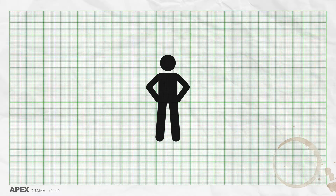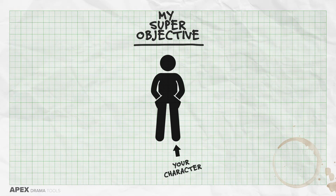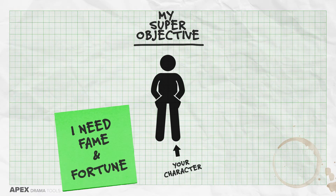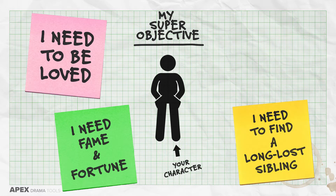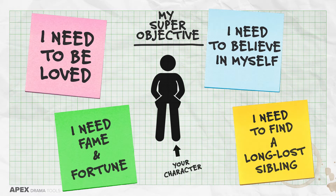What are they? A super objective is something that your character needs in their life — a life goal, an overarching aim or goal for the whole play or their whole life. Some examples of super objectives might be: I need fame and fortune, I need to be loved, I need to find a long-lost sibling, I need to believe in myself.